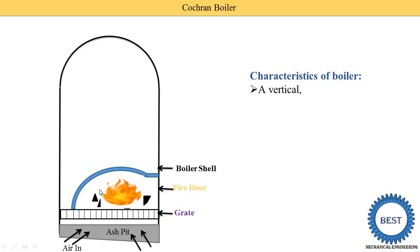When combustion starts, it creates hot gases or flue gases. These flue gases are supplied to the fire tubes. The Cochrane Boiler is a type of fire tube boiler — the fire is inside the boiler. Since the furnace is inside the boiler, it is also known as an internally fired boiler.